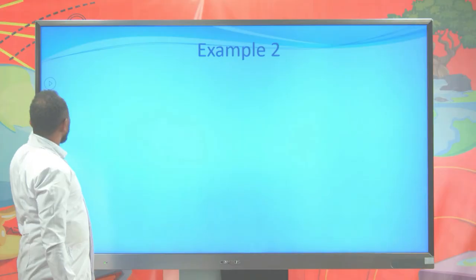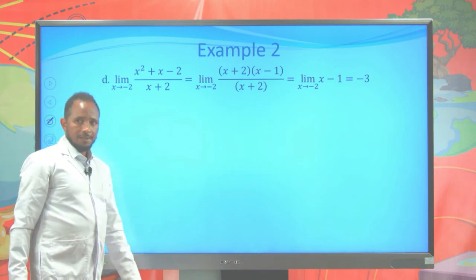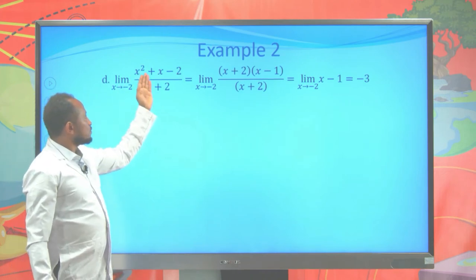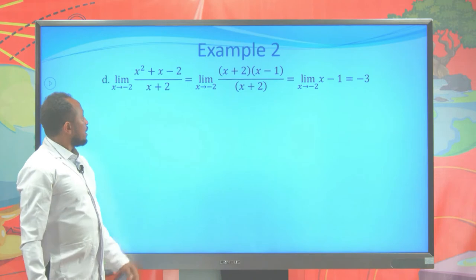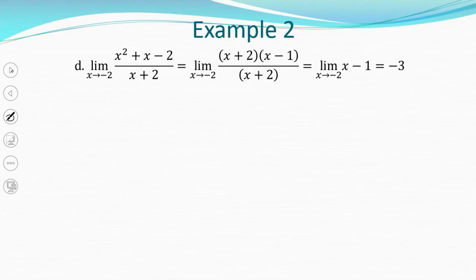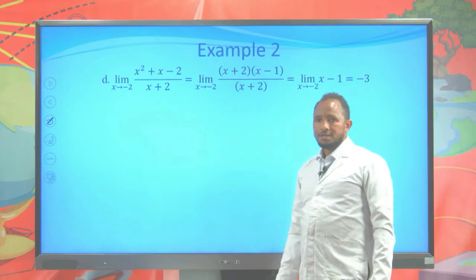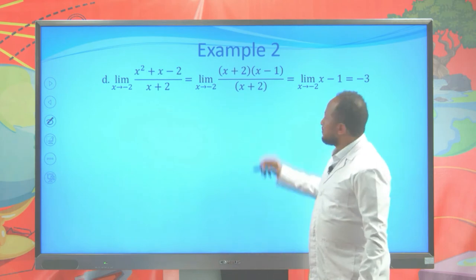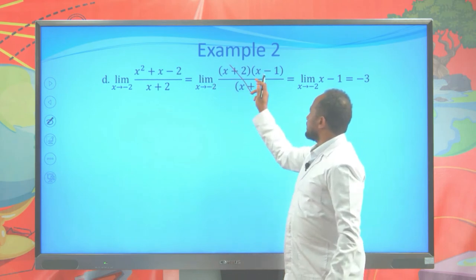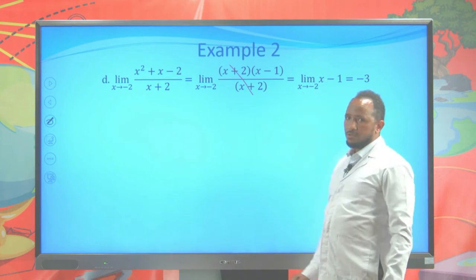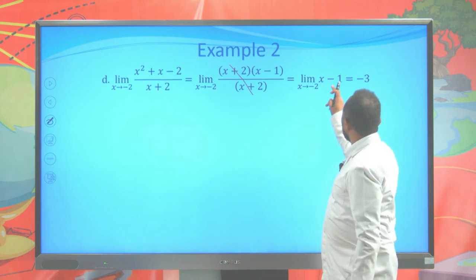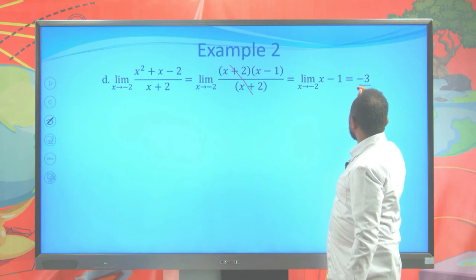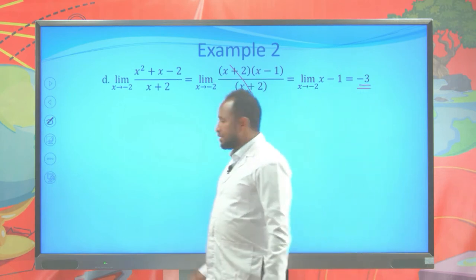Now evaluate the limit of (x² + x − 2)/(x + 2) when x approaches negative 2. We need to simplify this expression. When you factorize x² + x − 2, you get (x + 2)(x − 1) over (x + 2). The (x + 2) terms cancel, giving the limit of (x − 1) when x approaches negative 2. Since this is a polynomial, substitute negative 2: negative 2 minus 1 equals negative 3. The limit is negative 3.